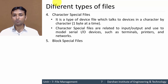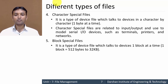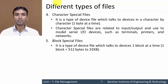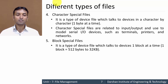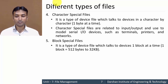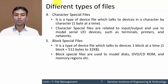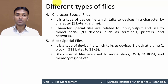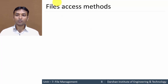The fifth type is block special file. It is a type of device file that communicates with devices one block at a time, where one block equals 512 bytes to 30 kilobytes depending on your device. Entire blocks can be transferred between devices. Block special files are used to model disks, DVDs, CD-ROMs, and memory regions.